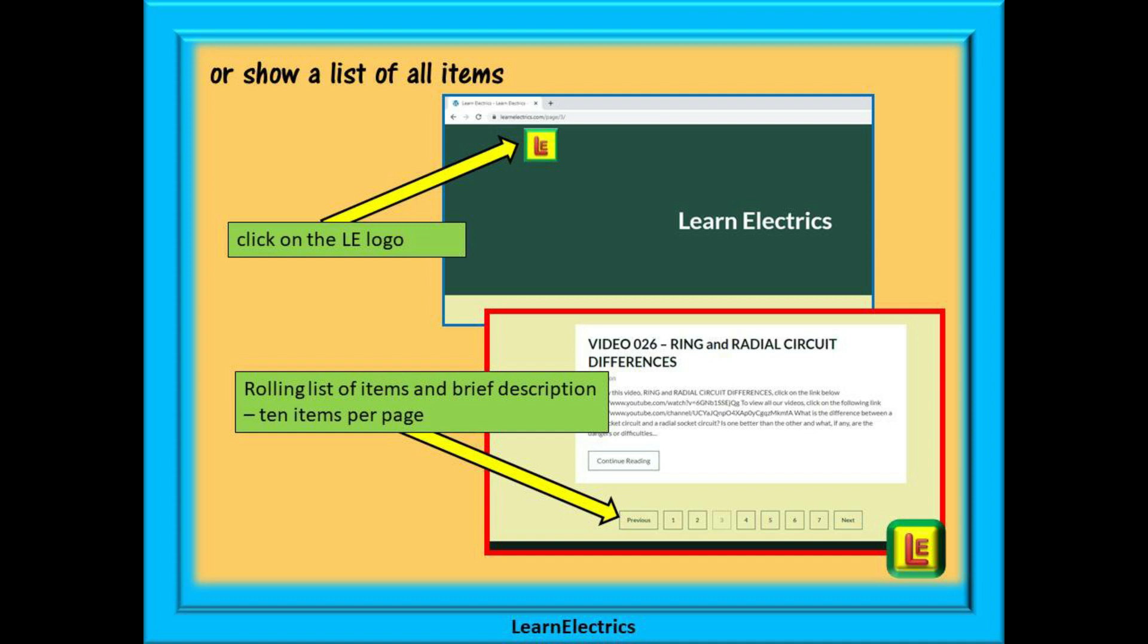Or, you can browse through a list of all the available items and videos. To do this, click on the LE logo on the top left of the home page, and all of our items and videos will be shown.